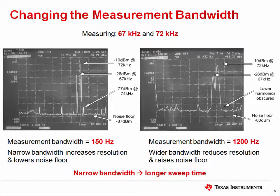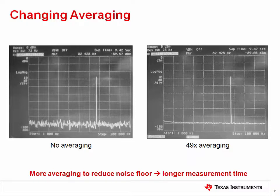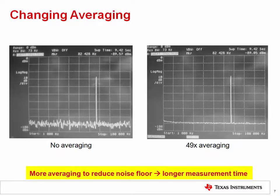Note that decreasing measurement bandwidth will increase the sweep time, essentially trading test time for improved accuracy. In some cases, for very high accuracy measurements, test times can take several hours, so it is not always practical to use an extremely narrow measurement bandwidth. Another way to improve measurement accuracy is to use averaging, which combines the results of multiple noise sweeps. In order to achieve accurate results, the device conditions need to remain constant. Averaging works very well for measuring spectral density, though it shares the same tradeoff — increasing averages for better accuracy will increase measurement time.